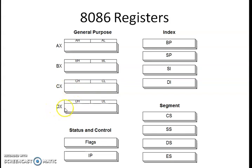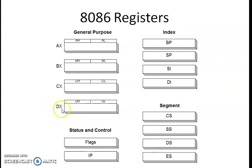The DX register is a data register. It is used to hold the result of a multiplication operation, and it is also used to hold the address of a port in port addressing modes. DX is used as a default register to hold the address of I/O devices when using port addressing modes.